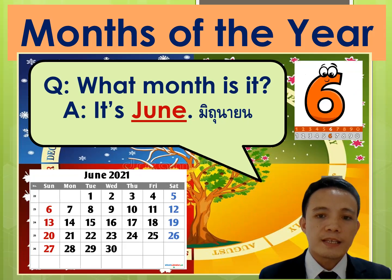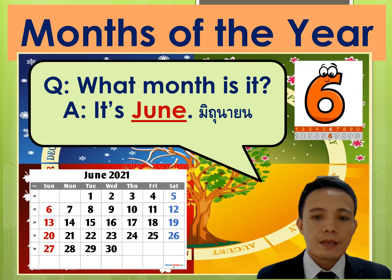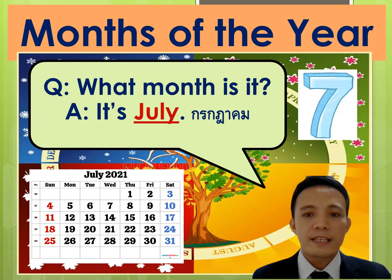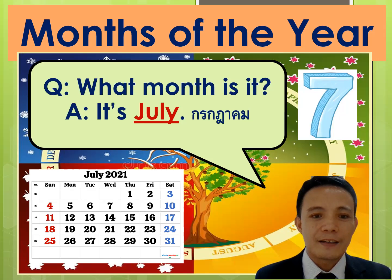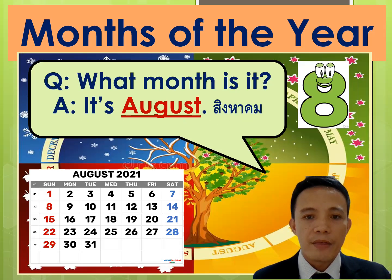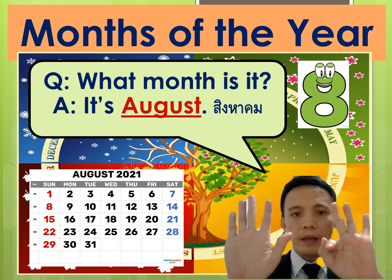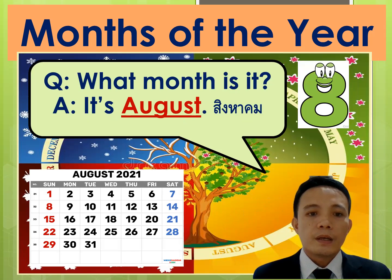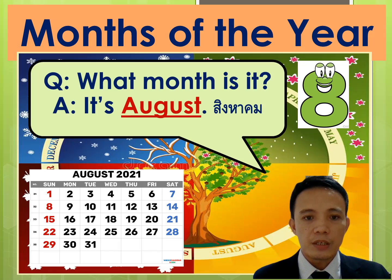Next, what month is it? It's June — that's J-U-N-E. Next, what month is it? The seventh month is July — J-U-L-Y. Next, what month is it? It's August. The eighth month. Can you see it? That's A-U-G-U-S-T, August.